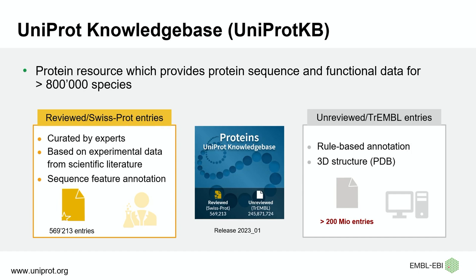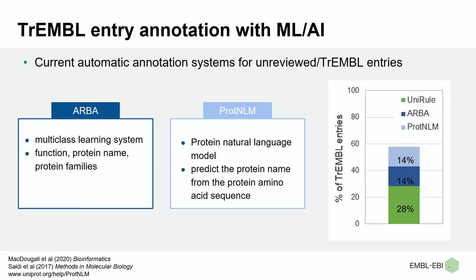The bulk of our entries are contained in the unreviewed TrEMBL section. This section contains proteins for which there is no experimental data known, or proteins that are waiting for curation. As you can see, there are more than 200 million protein sequences here. UniProt's aim is to provide predicted functional information for those entries. For this, we use a rule-based annotation system and also import information from the 3D structure database PDB. With our manually curated rules, known as UniRule, we can cover 28% of our TrEMBL entries.